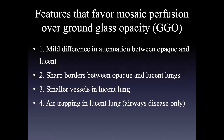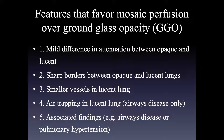When mosaic perfusion is due to airways disease, you would expect to see air trapping on expiratory CT in the same places that are lucent on the inspiratory CT. Associated findings can also be very helpful: we can see findings of airways disease such as tree-in-bud opacities, centrilobular nodules, or airway thickening, or signs of pulmonary vascular disease — particularly pulmonary hypertension — such as a big pulmonary artery or big right ventricle.